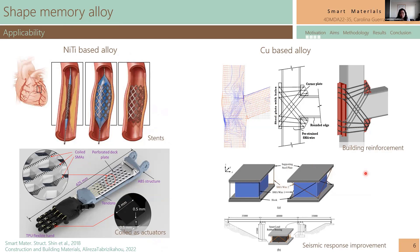For other kinds of applications, like building reinforcement or seismic response — for example, Chile, where I am from, is a seismic country — you need reinforcement for big structures like buildings or bridges. Copper-based alloys, because they are cheaper, can be used in large quantities. So it is a candidate to be viable for reinforcement and other applications in large quantities.